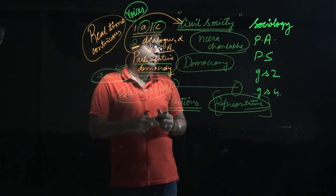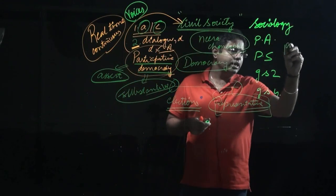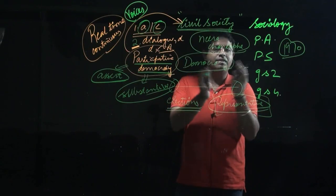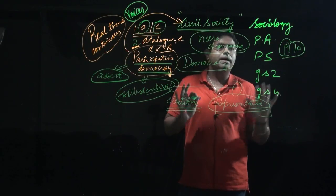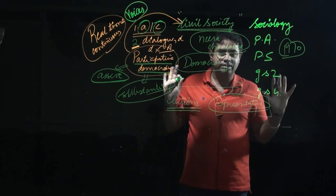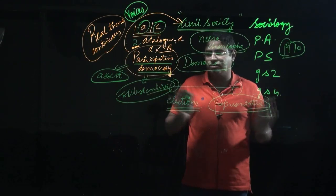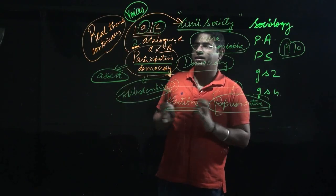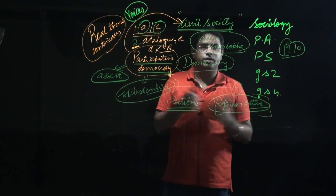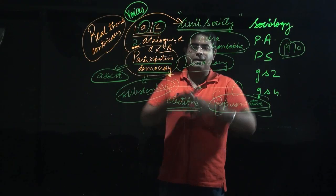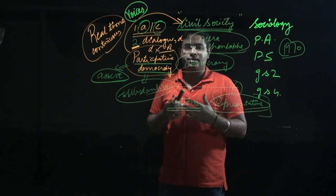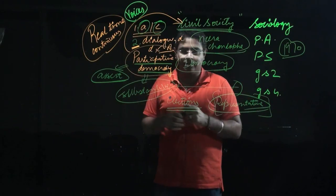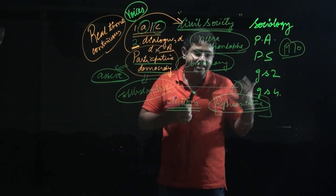Now, when it comes to India, as per Neera Chandok, till the 1970s the civil society was not organized. By 'organized' it means that the people collectively were not asserting their viewpoint about democracy and were not demanding to assert themselves. There was less social audit done by the people.